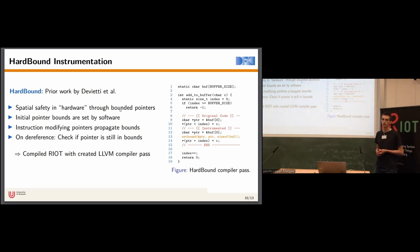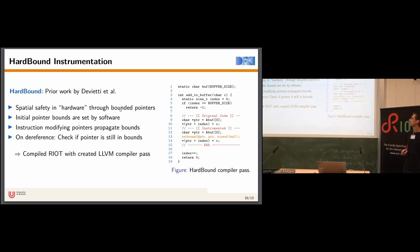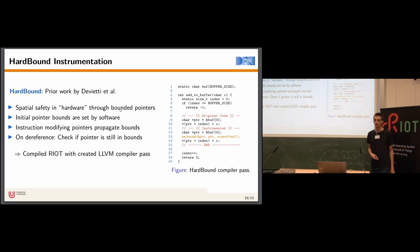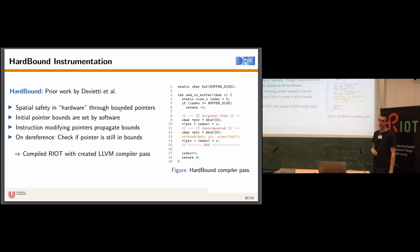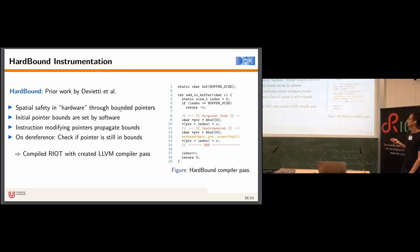HardBound requires the software to communicate initial pointer bounds. For this purpose, we have written an LLVM-based compiler pass which inserts a special function call to communicate the bounds of buffers and pointers to our virtual prototype. We create a pointer to a buffer in line 12, and our compiler pass inserts a custom set_bound function call communicating the start address and size to the hardware. When the pointer is then modified through arithmetic as in line 13, the hardware propagates the bounds, and on dereference we check if it remains within original bounds. These set_bound calls are automatically inserted, similar to AddressSanitizer.